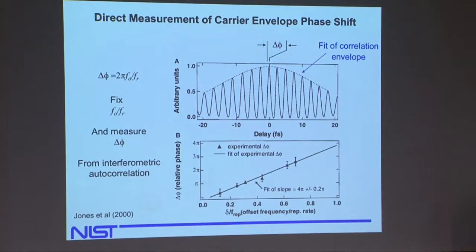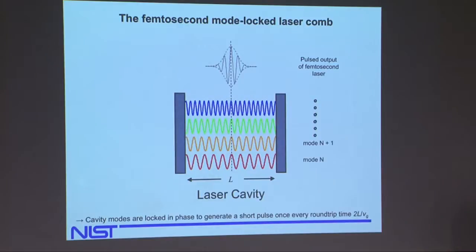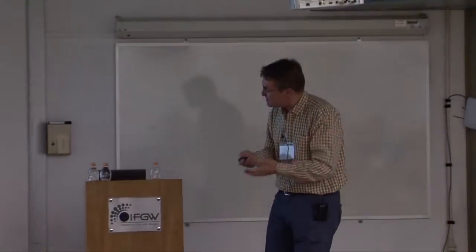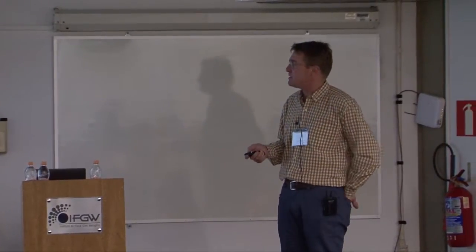And so we could verify from a time domain measurement that there really was a connection between the carrier envelope offset frequency, or the pulse-to-pulse phase slip, and this carrier envelope offset frequency, f0. So that's the last kind of time domain data I'm going to show you. Well, maybe there'll be something here and there, but this was just kind of an interesting illustrative experiment to show that there really is this connection between the time and frequency domains for these parameters.